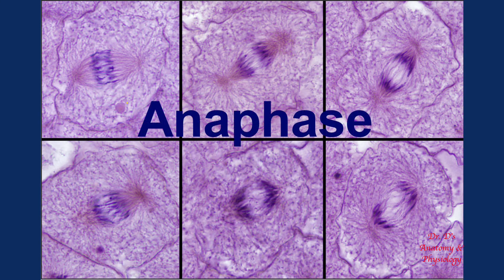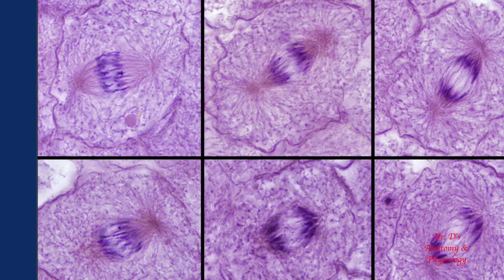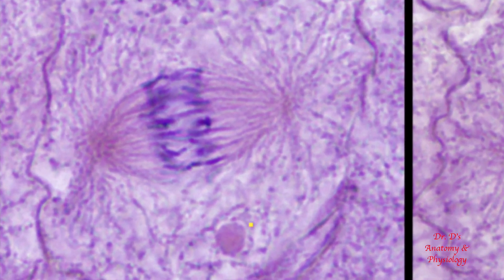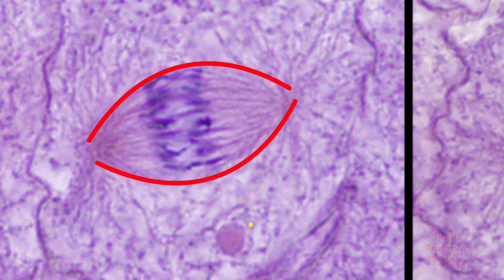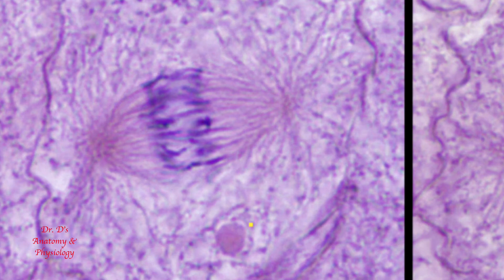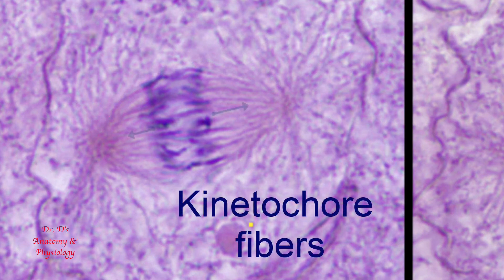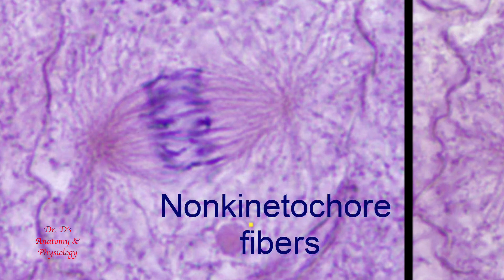The next phase is anaphase. The prefix 'ana' means apart, as in anatomy, which means to cut apart. During this phase, the chromatids separate and move to opposite poles. When the chromatids separate, they are now called chromosomes. Here is an early stage of this separation — notice that there is now a space between the duplicated sets of chromosomes. The spindle apparatus now has a definite spindle shape, like an American football. Within this spindle there are kinetochore microtubules, which are pulling the chromosomes of each duplicated set to either pole. There are also non-kinetochore microtubules, which go past the chromosomes and interact with fibers from the other side in a manner that pushes the chromosomes apart.